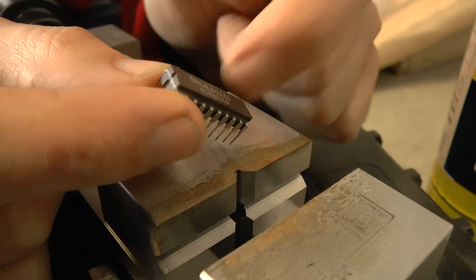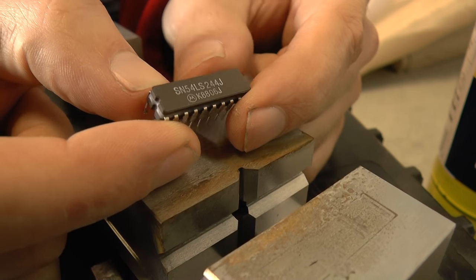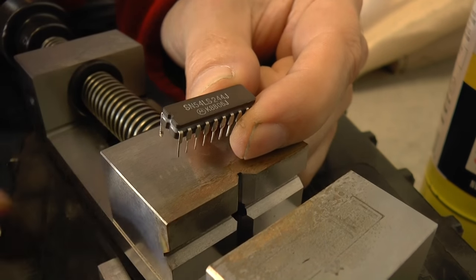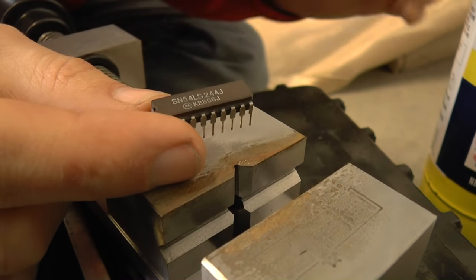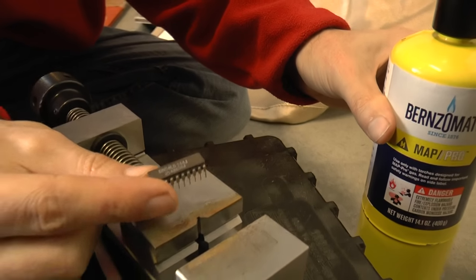They typically come in ceramic packages because ceramic can take more heat, which is going to be an issue for us because we want to use a lot of heat to melt the glass frit and take off the top to get to the die.